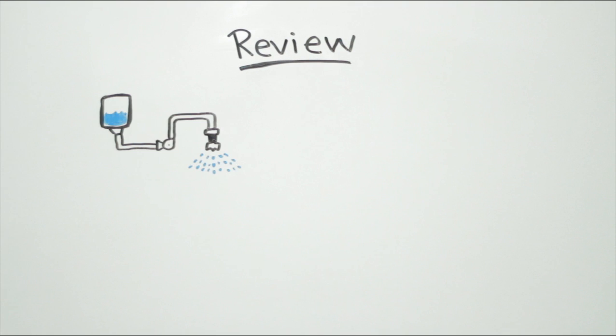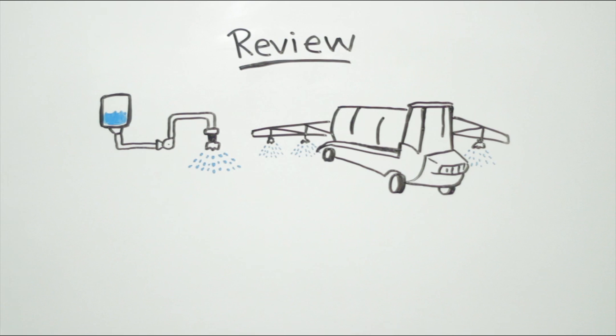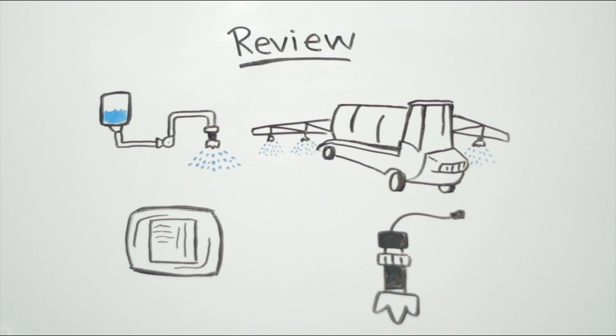Let's review. Speed and pressure systems had productivity issues. Larger sprayers solved productivity issues, but created over and under application issues. Rate controllers solved under and over application issues, but created pressure issues. Capstan PWM technology solved pressure issues and actually improved the overall productivity of the sprayer.